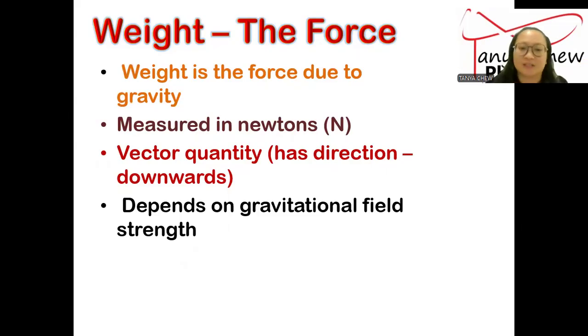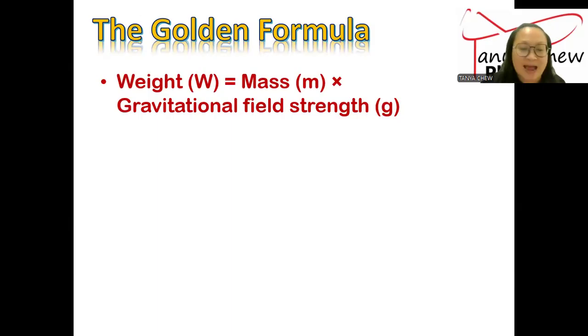What is gravitational field strength? Gravitational field strength is the gravitational force acting on an object to see how strong the force is. Different planets have different gravitational field strength. Now the golden formula that you are supposed to remember is that there is a relationship between weight and mass. Weight, or W, is equal to mass, m, times the gravitational field strength, g. And weight must be measured in newtons, mass must be in kilograms, and gravitational field strength must be in meters per second squared or newtons per kilogram.